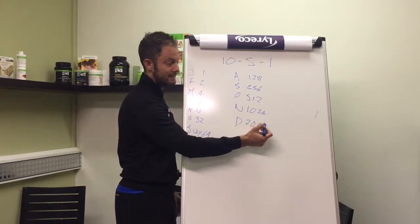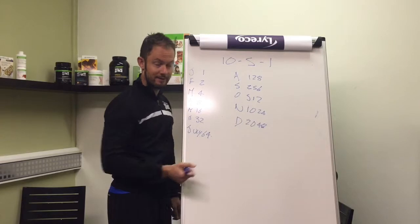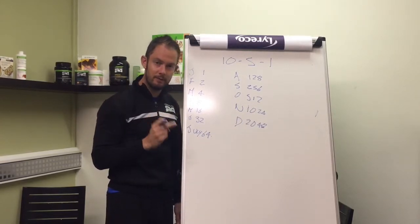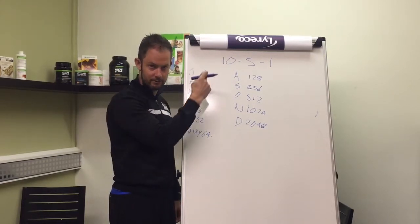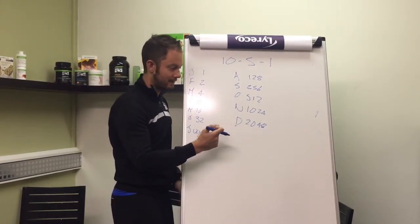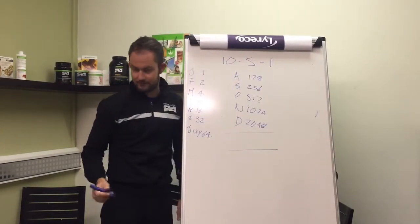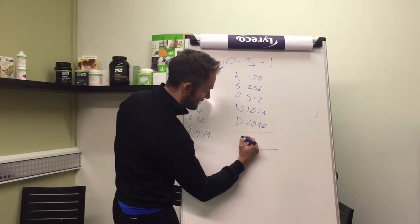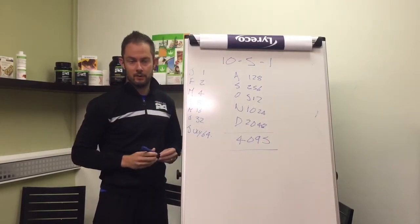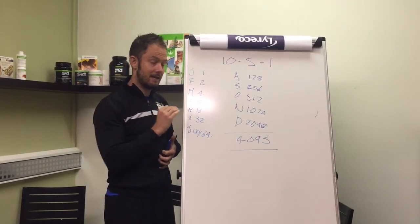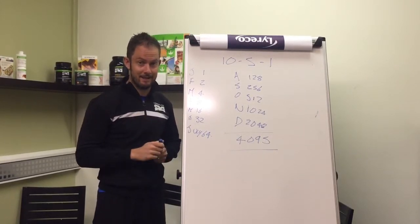So these numbers here are the new people that you're getting introduced into your business during these months. So during December you're getting over 2,000 new people just from following this one duplicatable model throughout the year. Which gives us a total, if you add up all these new members, you're going to get 4,095 members within a 12 month period, by you personally following 10-5-1 and teaching those people in your business to follow exactly the same again.